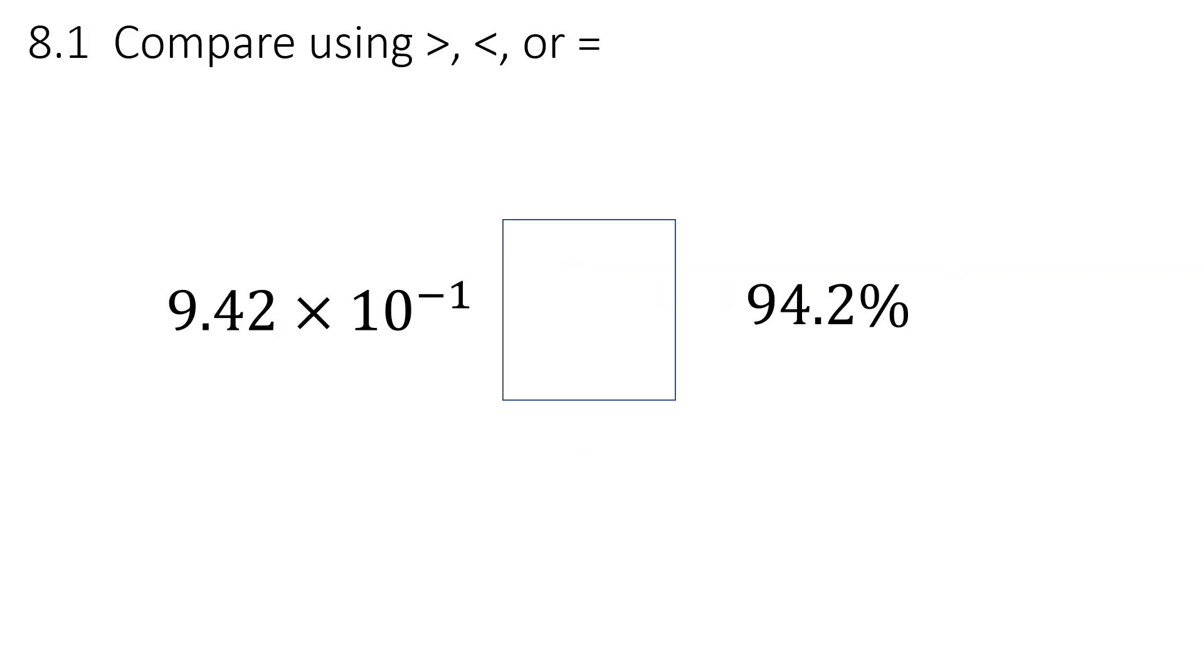So we have 9.42 times 10 to the negative 1 and 94.2%. On the left, that number is written in scientific notation. The negative 1 tells you to slide the decimal one place to the left. Over on the right, that's just a percentage to make it into a pure decimal. Percent always means slide the decimal two places to the left. So these two are equal.